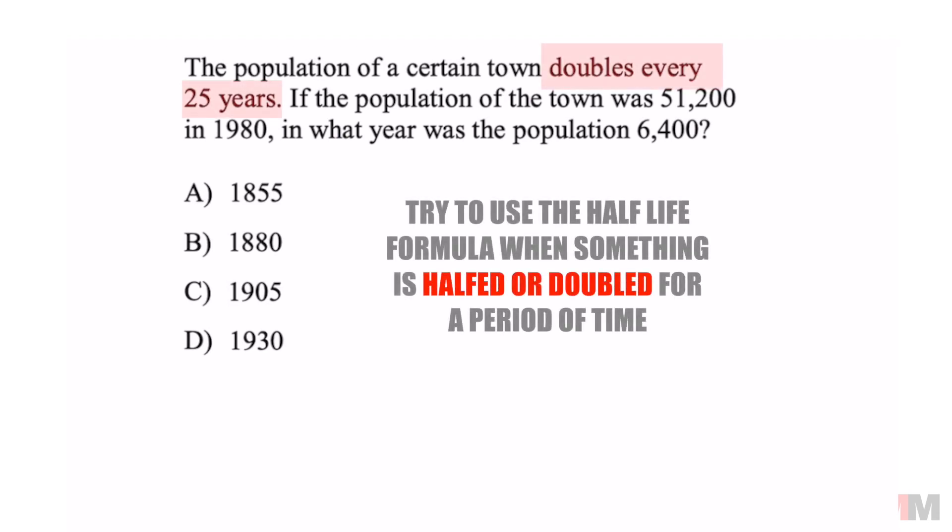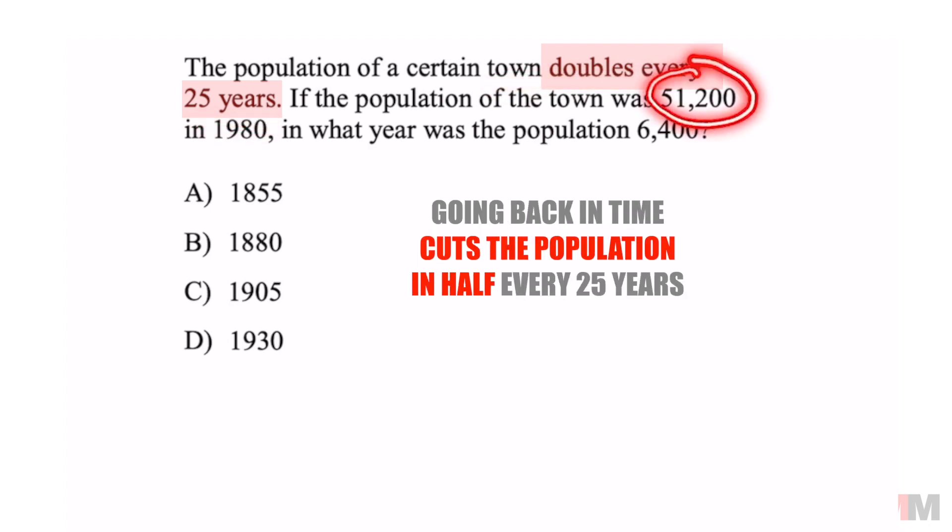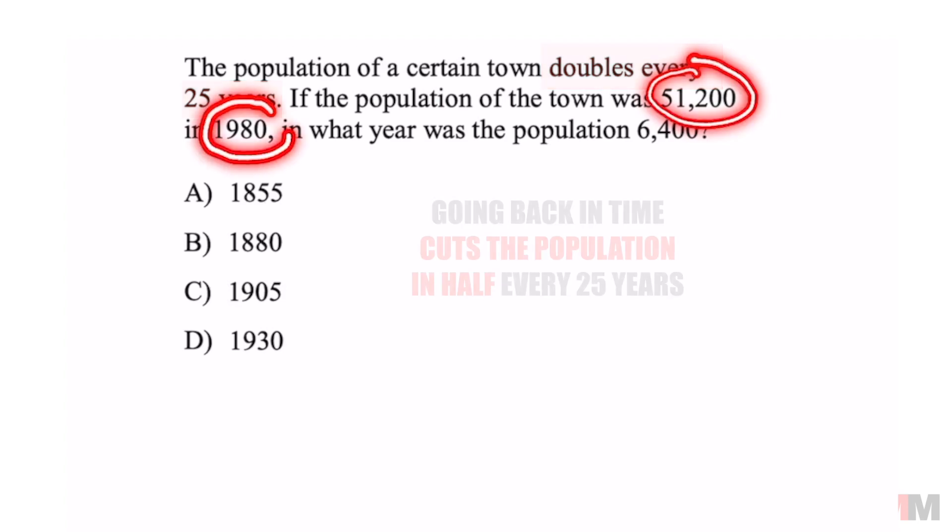Since this says the town doubles every 25 years, that is the same thing as saying that this population is going to be cut in half every 25 years back from 1980.